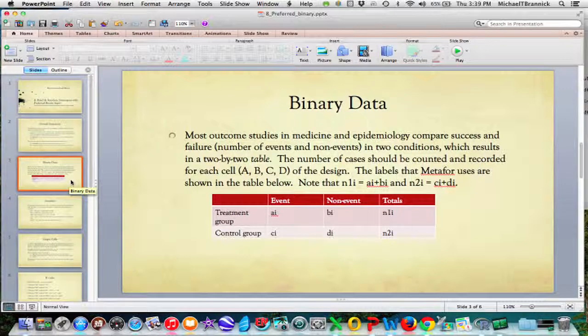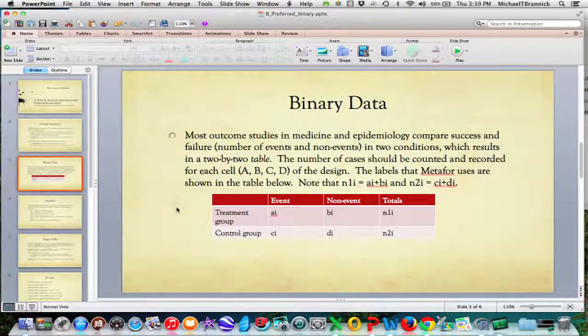In most studies in medicine and epidemiology, they compare success and failure—the number of events and non-events in two conditions, a treatment group and a control group. The events and non-events by the two groups gives you a fourfold table, a two-by-two table. The number of cases should be counted and recorded for each cell: A, B, C, D. That's the preferred format, and the labels that Metaphor uses are shown in this table.